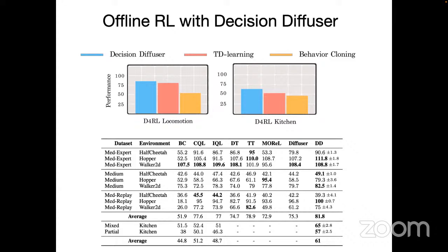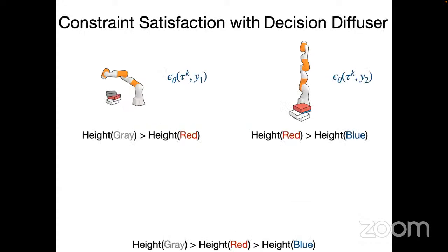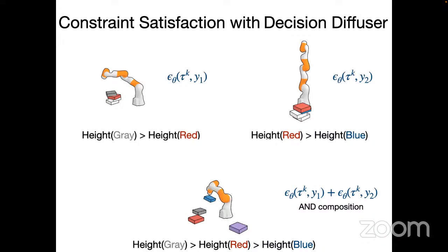This suggests current generative models are very powerful and can learn what we try to learn with offline RL algorithms, with much less instability. You can also condition this model on constraints — for example, training it conditioned on a gray block on top of a red one, or a red block on top of a blue one. You can also compose multiple models together: if one generative model specifies 'red block on top of blue' and another specifies 'gray on top of red,' you can add the denoising predictions to compose those two models, allowing very controllable behavior changes.